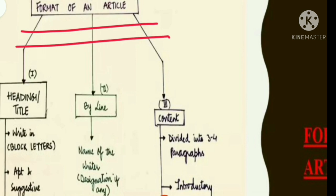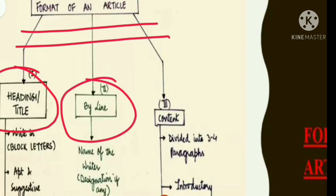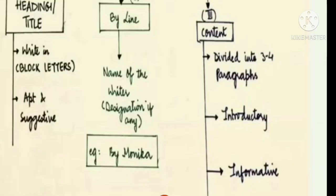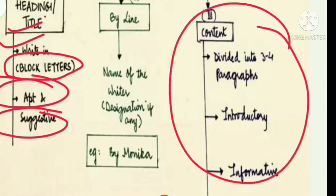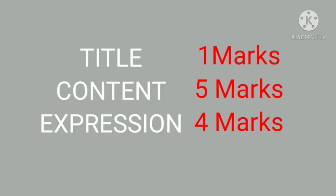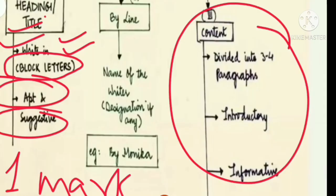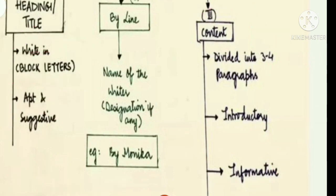Let's talk about the format of an article. First, we have to write the heading, then the byline, and then the content. The heading should be written in block letters and it should be apt and suggestive. It should be related to the paragraphs and content you are going to write. If there is a mismatch, the examiner will not give you marks for the title, which carries one mark.